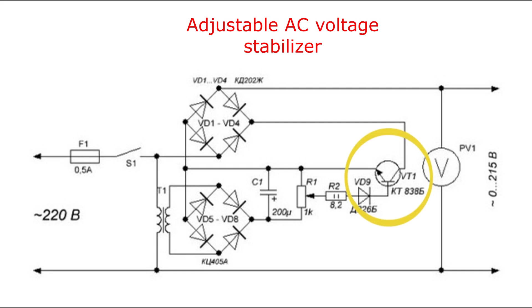A feature of this circuit is the use of a bipolar transistor T1 as a regulating element, included in the diagonal of the bridge on diodes from D1 to D4, which acts as a variable resistor for the load.